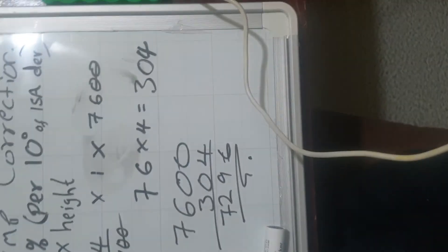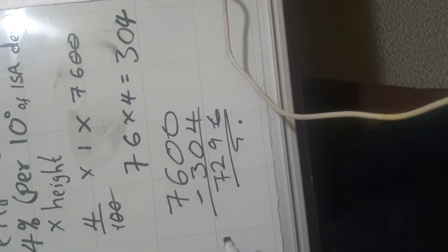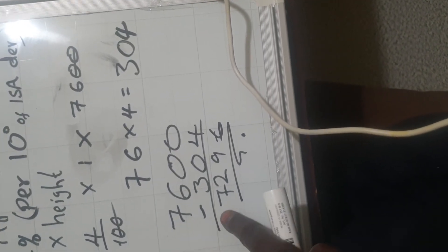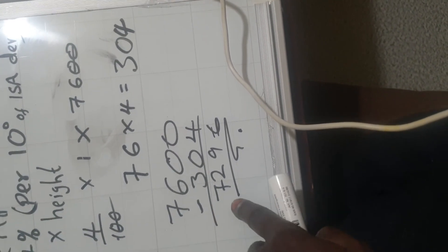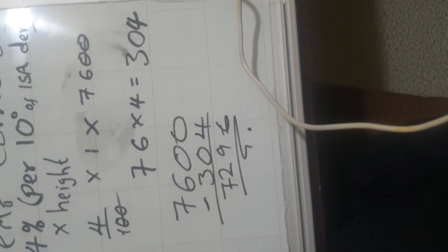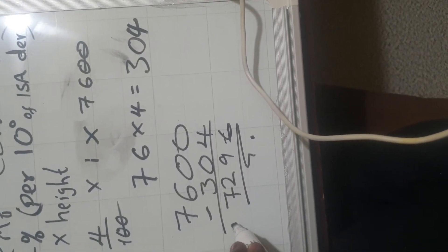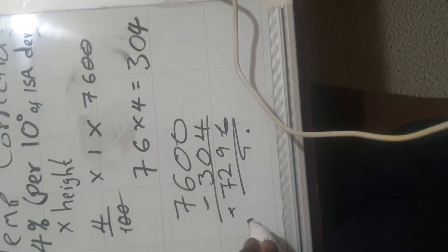So if it is colder than ISA, what you do is you minus from what you have already calculated. So if it was plus, you just add the altitude. If it's minus, you subtract from the first correction. So for this case, it's 7,600 subtract 304, you get 7,296, which is the answer in number 27. So that's it.